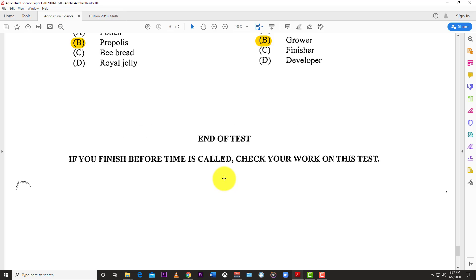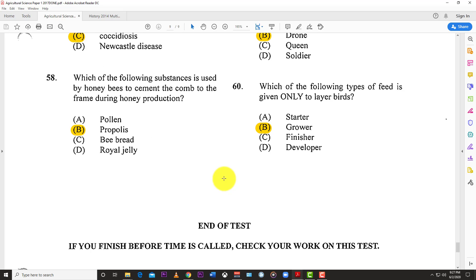That's the end of this CSEC Agricultural Science single award exam paper one from 2017. You know what to do now: like, subscribe, share, and hit that bell so you know when the next video drops, as your exams are rapidly approaching. Thanks for watching.